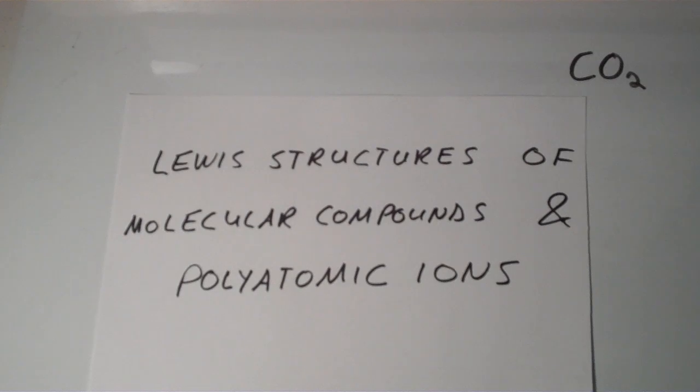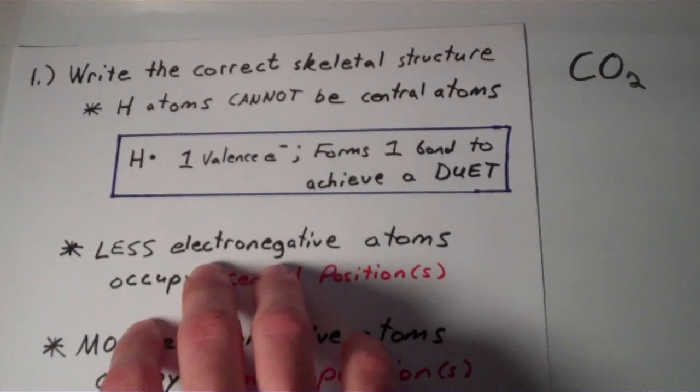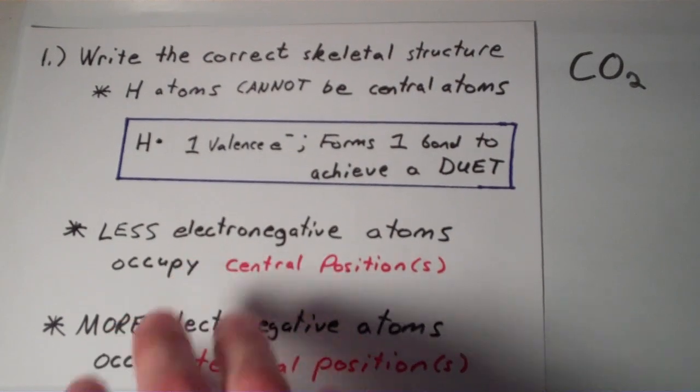So I'm going to do one example in this video and I'm going to do it step by step and I'm going to try to explain all the steps along the way. So the example that I've chosen is the Lewis structure of CO2, carbon dioxide. So what is the Lewis structure of CO2? Well the first thing that you want to do is you want to write the correct skeletal structure for the molecule.